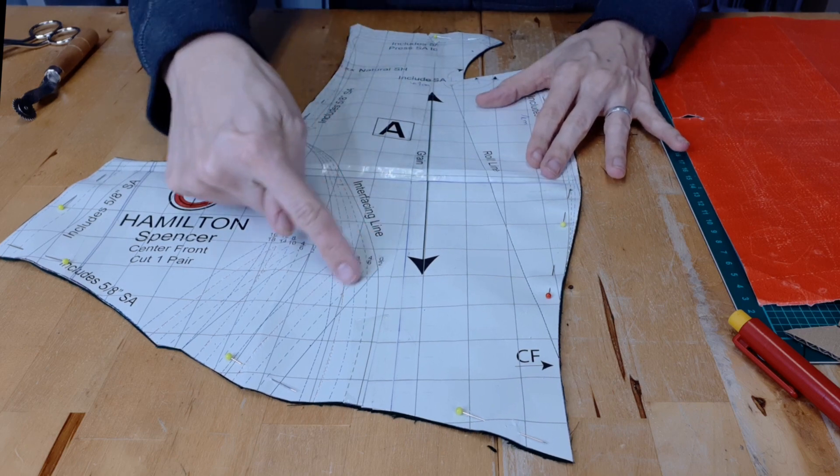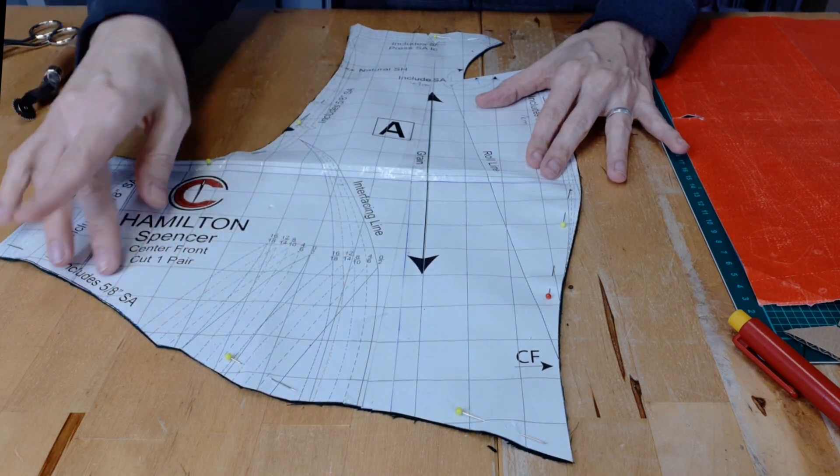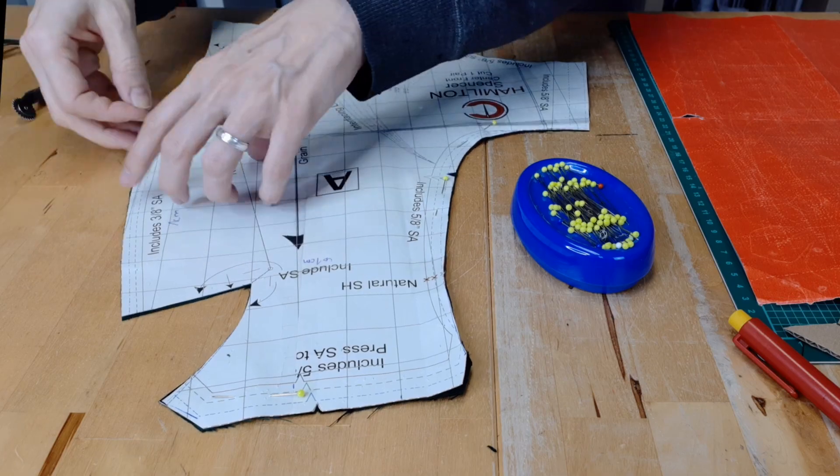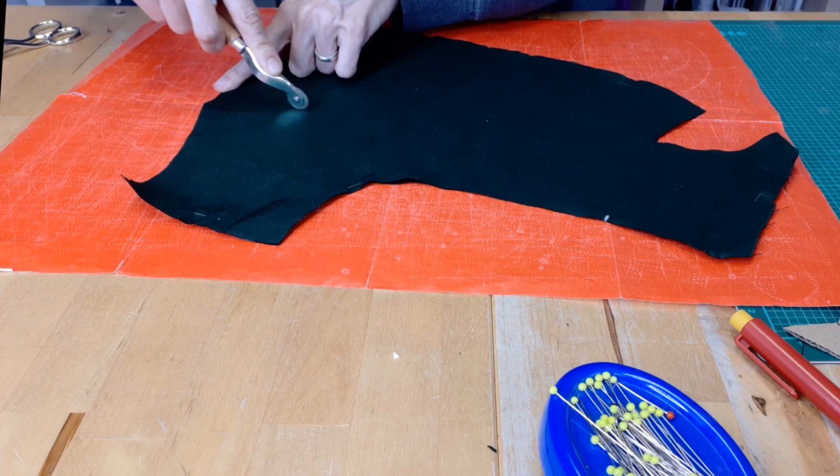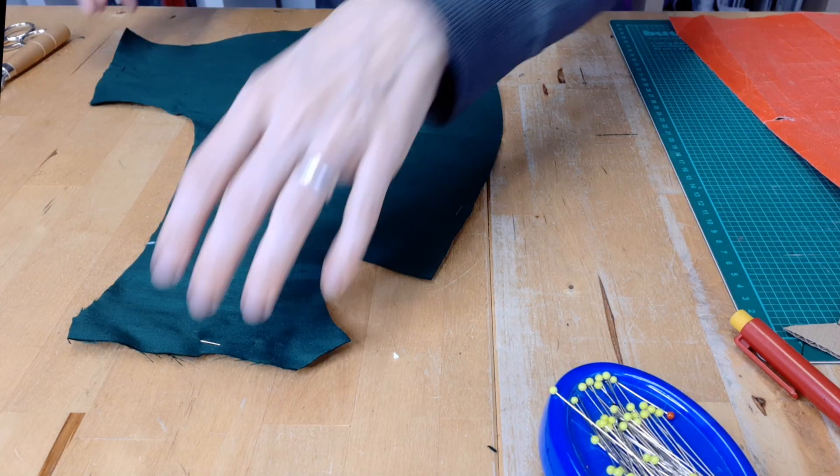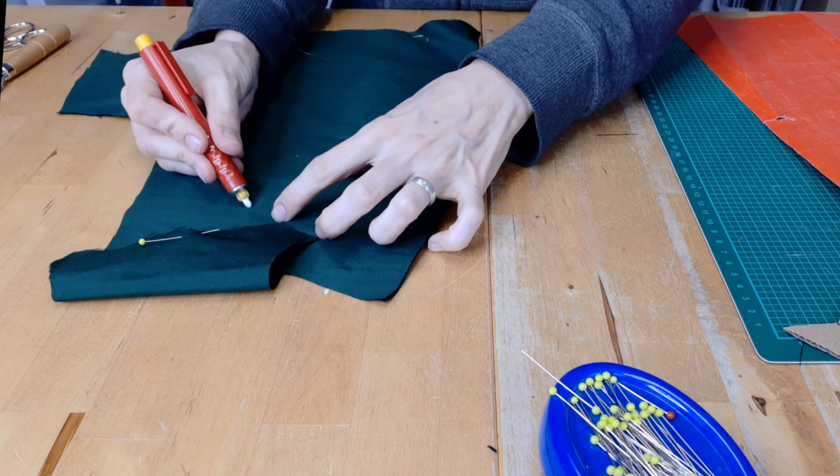After preparing all the double piping for the spencer I started to do all the markings on my front pattern pieces. I traced them with waxed paper and a tracing wheel and after that I went over these lines with thread tracing. Then I flatlined these pieces.